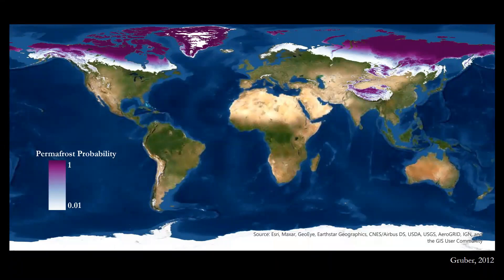Permafrost is traditionally defined as ground that has been frozen for at least two years, and is estimated to cover about 10% of the global land surface. In the Arctic alone, permafrost soils are estimated to store more than 1.5 trillion tons of carbon, or twice that of the entire atmosphere. Therefore, accurate maps and more precise surveys of permafrost are necessary to better quantify the projected consequences of warming and eventual permafrost thaw due to climate change.